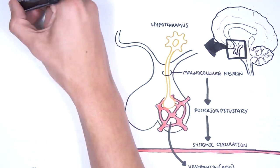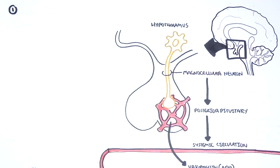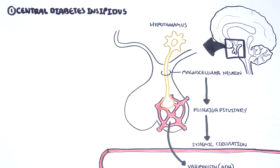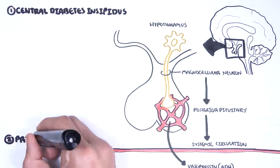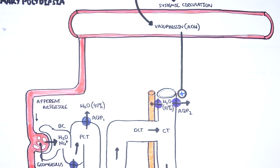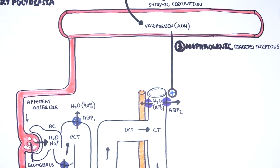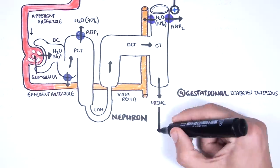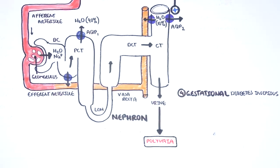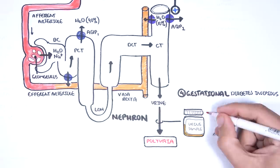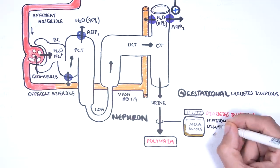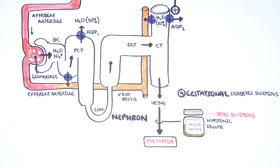We can group the causes of diabetes insipidus into four groups: central diabetes insipidus, primary polydipsia, nephrogenic diabetes insipidus, and gestational diabetes insipidus. All these etiologies present as polyuria, and the urine sample is hypotonic and dilute — tasteless, hence insipidus.